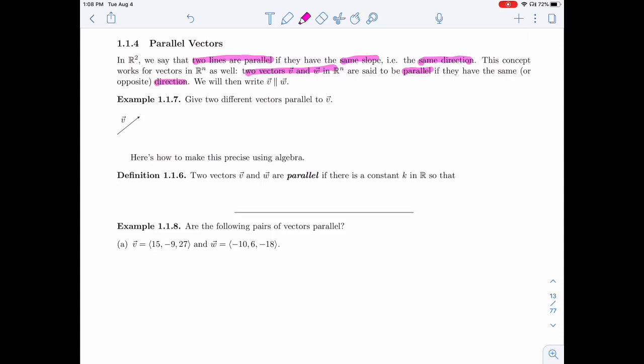But also if they have opposite direction. That's something that you don't really have with lines. Two lines will have the same direction. We don't really have an arrow on one side of them. So same or opposite direction.